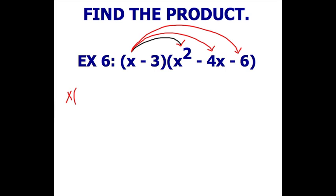So you'll be multiplying x with x squared, x with negative 4x, and x with negative 6.